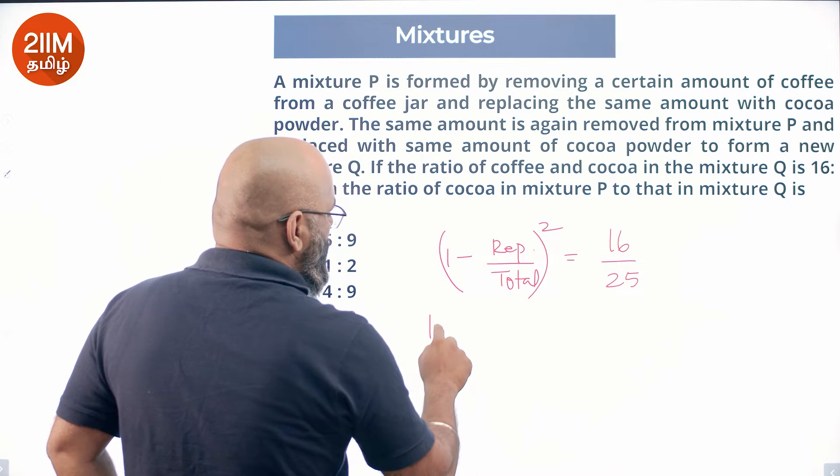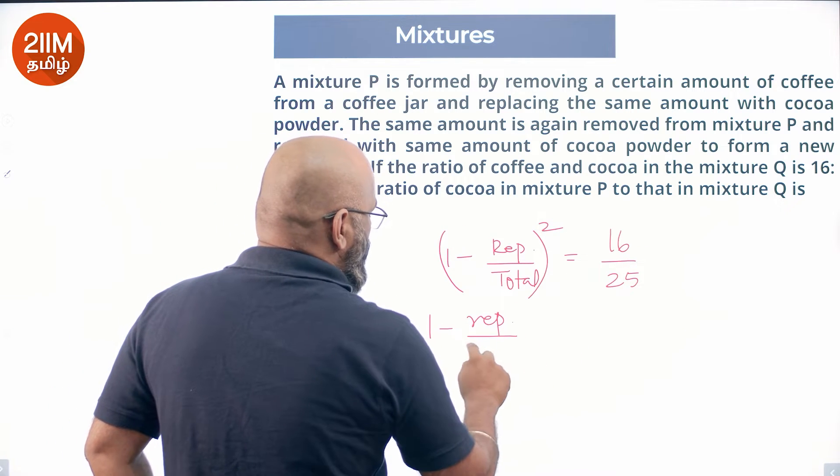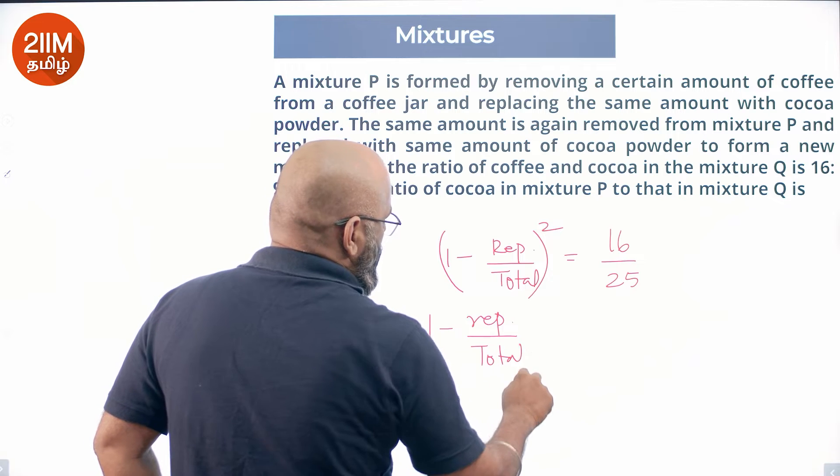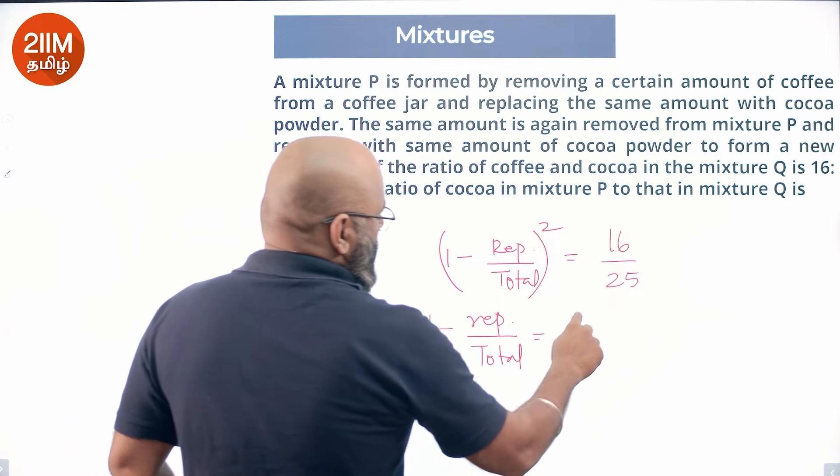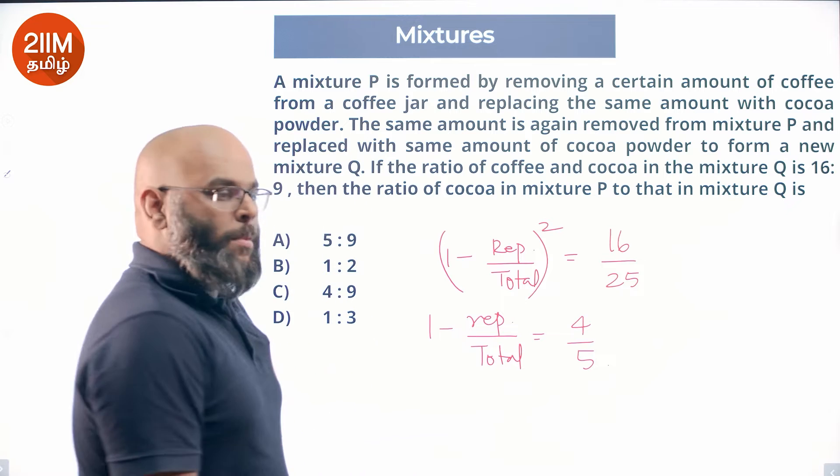Then root is 1 minus replaced by total, which is equal to 4 by 5.